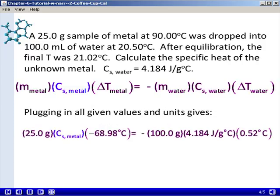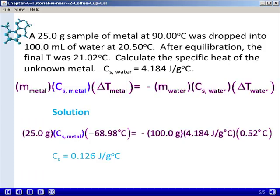If we plug in all the given values and units, make sure you keep units at everything to make sure that all of the units are self-consistent. We solve for C_s for the metal and we find a value of 0.126 joules per gram per degree Celsius.